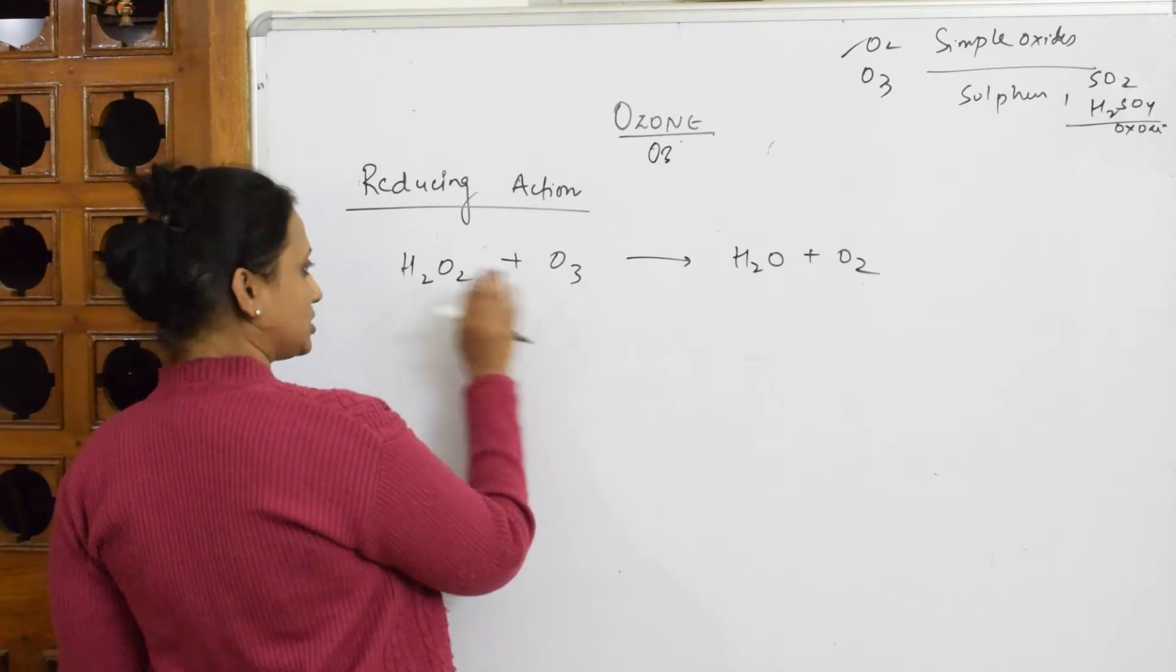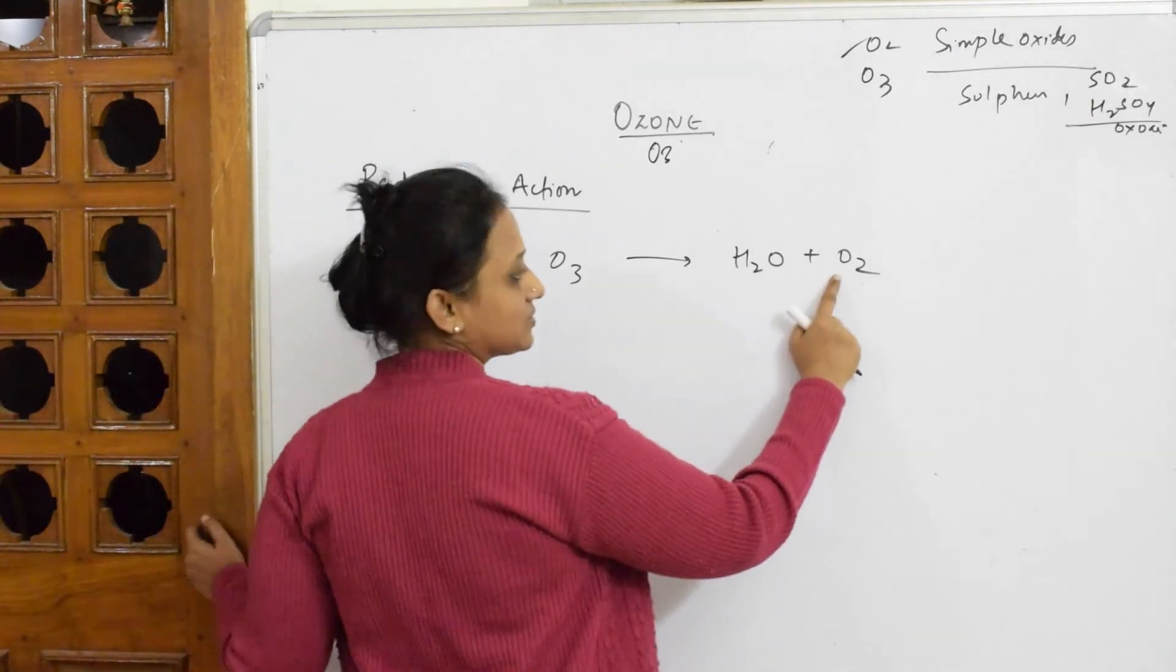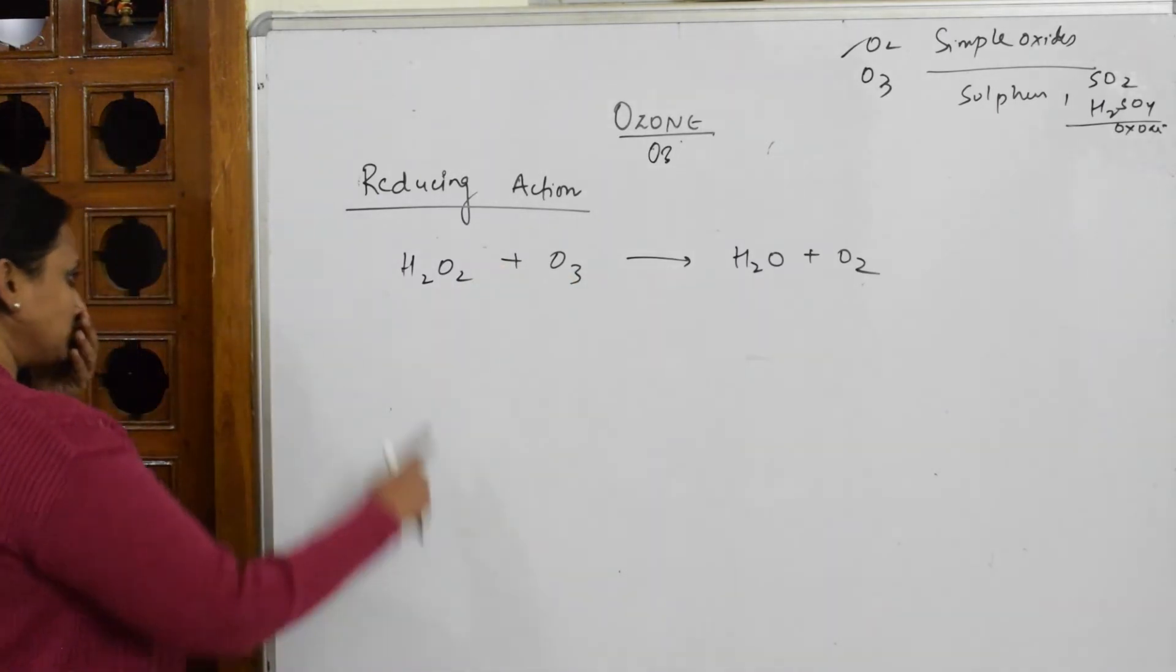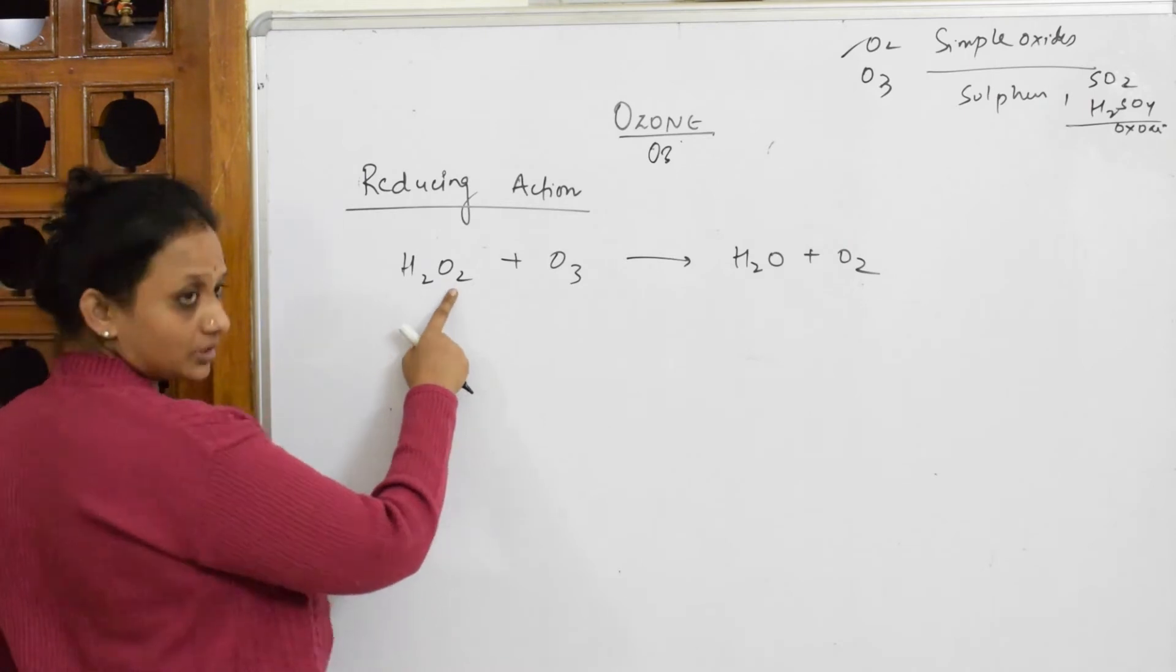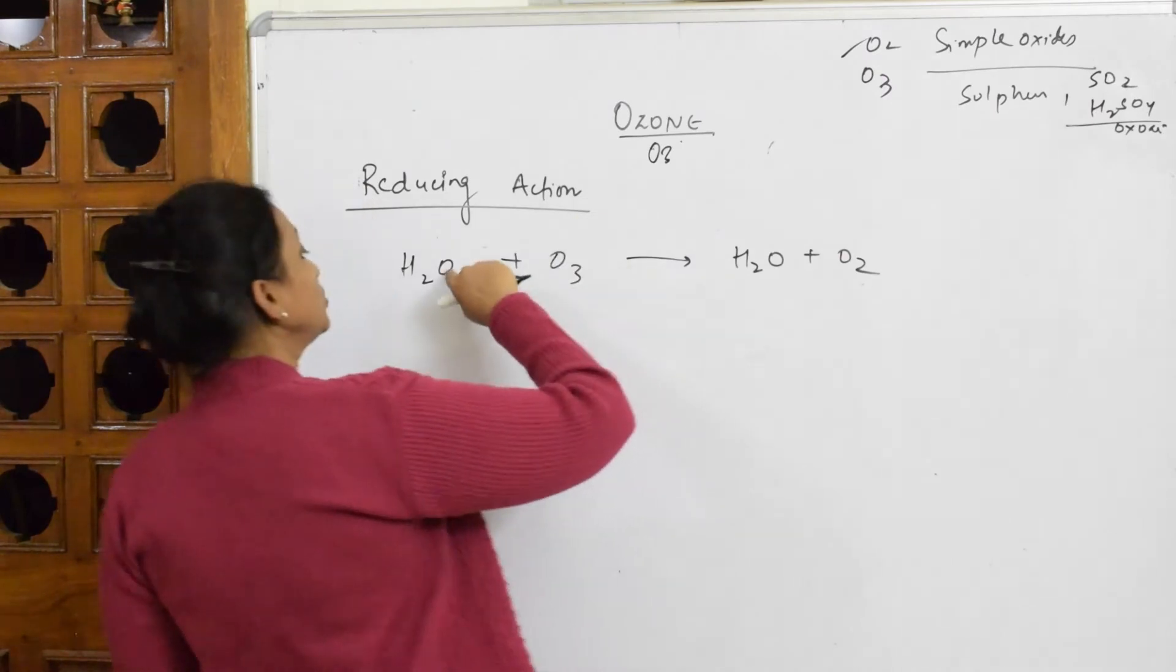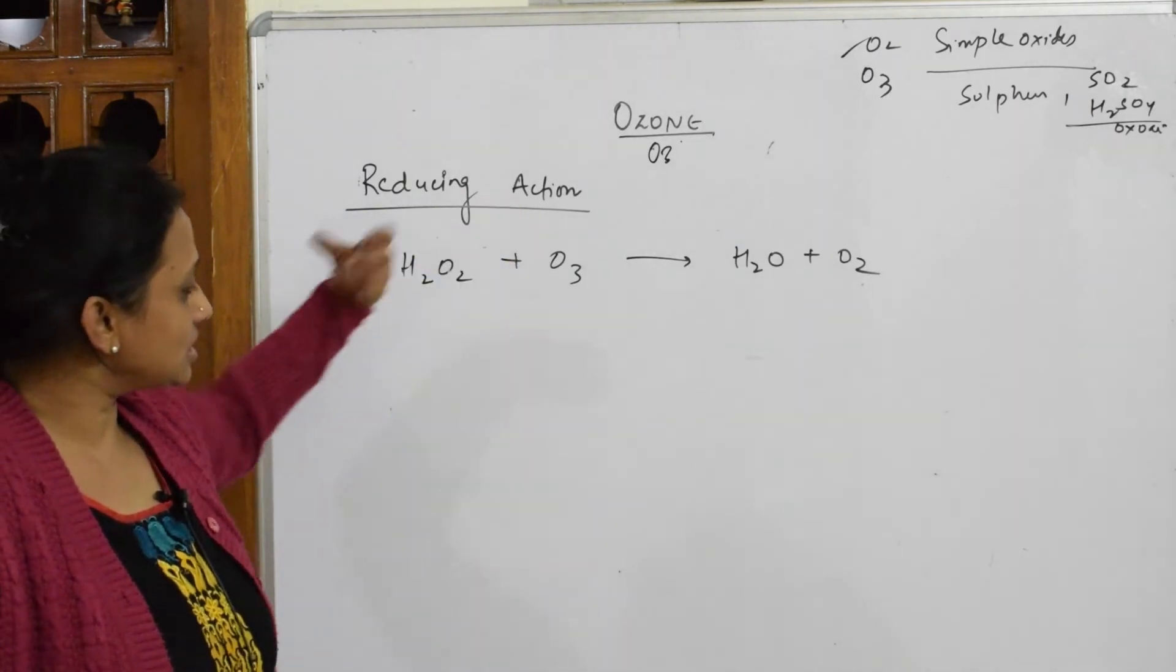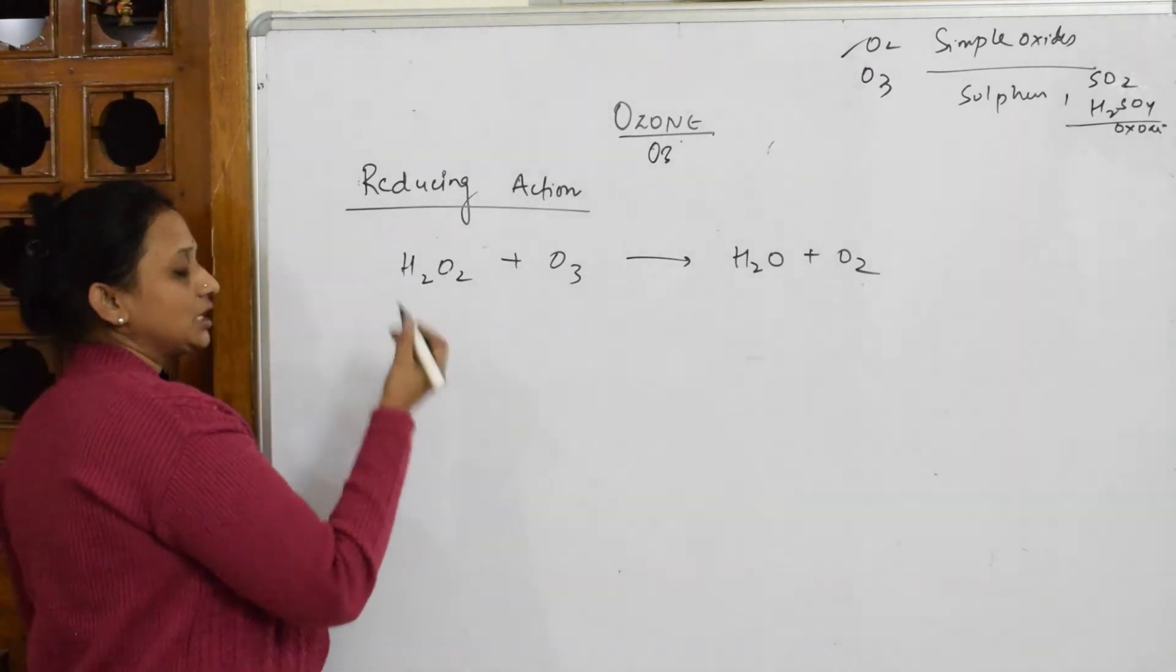What's happening here? This ozone is showing its reducing action. See, this has gotten converted. When you observe, the oxidation state is minus 2, 2 into 2 is 4. From minus 2 it has come to minus 4, then back to minus 2. It picked up the electron. So ozone has lost electrons to this and has shown reducing action.